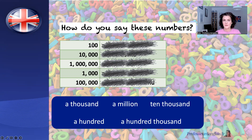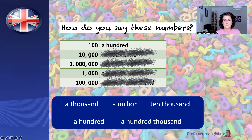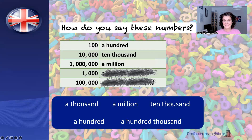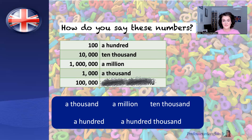So let's look at this first number. A hundred. Let's look at the next number. Ten thousand. A million. A thousand. A hundred thousand.